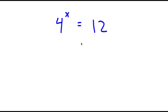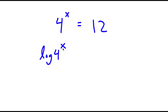In this problem, I have 4 to the power of x is equal to 12. To solve this, I'm going to first start by taking the log on both sides. So now I have log 4 to the power of x is equal to log 12.